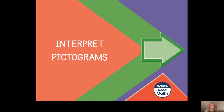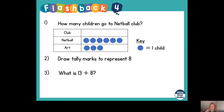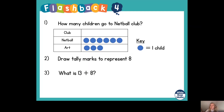Before we start interpreting our pictograms, I'd like us to warm up our brains with our flashback. You have three questions. In the first question: how many children go to netball club? Have a look at the key for the pictogram and find out how many children are represented by one circle, then look at netball in the pictogram to work out the total number of children that go to netball club.